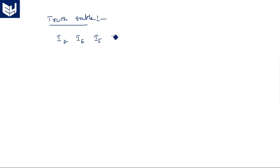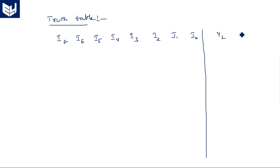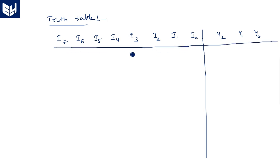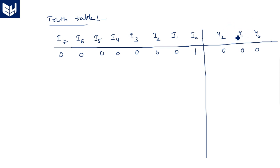The truth table consists of inputs I7, I6, I5, I4, I3, I2, I1, I0 and outputs Y2, Y1, Y0. First, when I0 pin is activated and the rest of all the input lines are zero, the outputs are simply zeros — zero zero zero. MSB to LSB is always the best representation in truth table format.